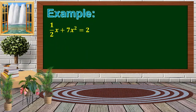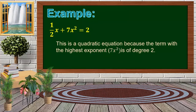How about this one? As you can observe, we have the highest exponent 2 — we have 7x raised to 2. So we have a quadratic equation.